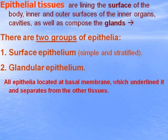The first tissue you will study is epithelial tissue. It lines the surface of the body, inner and outer surfaces of inner organs and cavities, and also composes the glands. There are two groups of epithelia: surface epithelium — simple and stratified — and glandular epithelium. All epithelia are located on a basal membrane, which underlies them and separates them from other tissues.